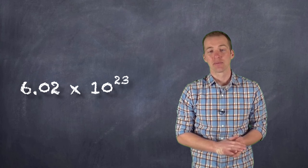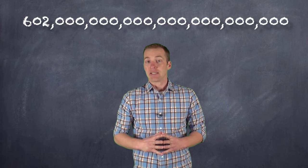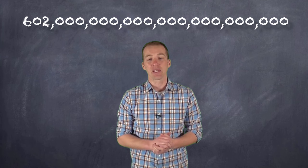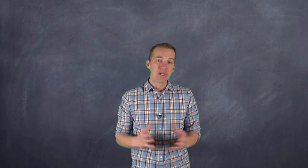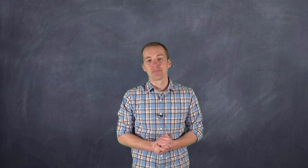How big is it? It's this big — a lot of zeros. Now when we deal with a number this large, it kind of makes sense when you think about it, because atoms are extremely small. They're so small that in order for them to be in a manageable quantity, we're dealing with a really really large number of them. How big is this number? That's really hard to picture, but let's try.